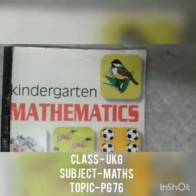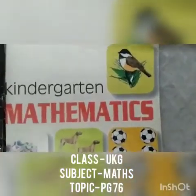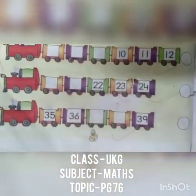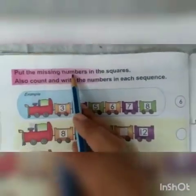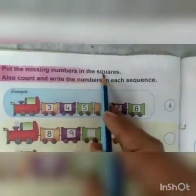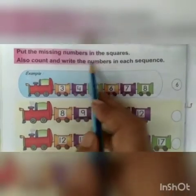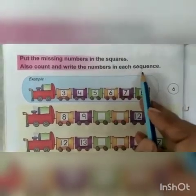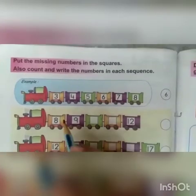Good morning children. This is your math book. Now open your book and go to page number 76. Today we will put the missing numbers in the squares. Also count and write the numbers in each sequence. Okay, let's start.